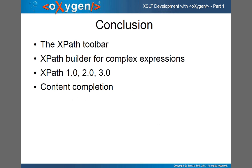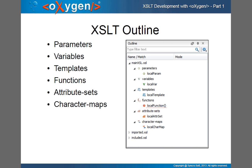You can use the XPath toolbar to perform XPath queries on an XML document. For complex XPath expressions, use the XPath Builder with support for XPath 1.0, 2.0, and 3.0. Content completion and validation are available in both the XPath toolbar and builder. The Outline view helps you identify components in the stylesheet — it shows parameters, variables, functions, and errors. If there is an error in a function, it's highlighted in the Outline as well.